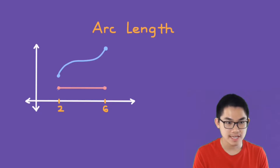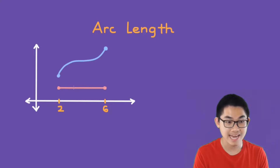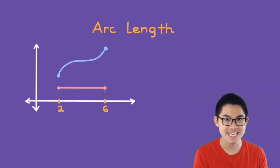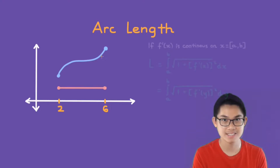Well, first let's look at the pink line. We know that this horizontal line goes from 2 to 6, so the length must be 4. That's pretty easy. But for the blue line, you would need to use formulas.